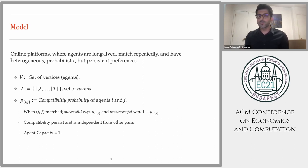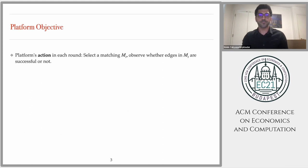Note that the input graph we're considering is not necessarily bipartite. In our base model, we assume capacity of agents is 1 — we'll later generalize this. In every round, the platform can select a matching and observe whether edges selected in that matching are successful or not.